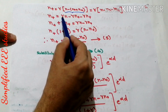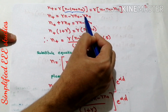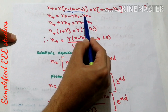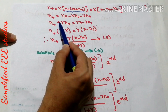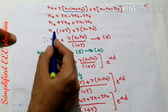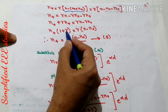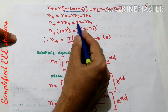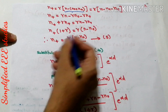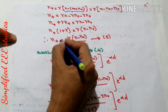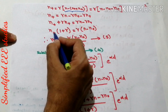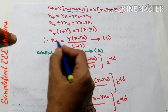Now simplify: N⁺ + γN⁺ = γN − γN₀. Taking N⁺ as a common factor: N⁺(1 + γ) = γ(N − N₀). Therefore, N⁺ = γ(N − N₀) / (1 + γ). Call this equation number 5.